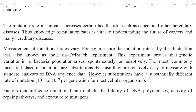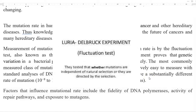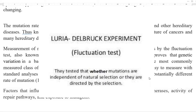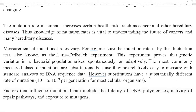Measurements of mutational rates commonly vary. The fluctuation test is employed to measure mutational rate and is the basis for the Luria and Delbruck experiment, which proves that genetic variation in a bacterial population arises spontaneously. The most commonly measured class of mutations are substitutions, as they are relatively easy to measure in genome sequence data. Factors that influence mutation rate include fidelity of the DNA polymerase enzyme, activity of various DNA repair pathways in the cell, and exposure of an organism to mutagens.